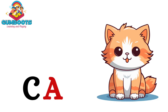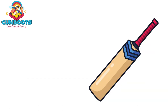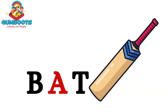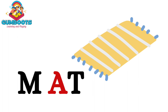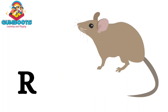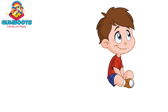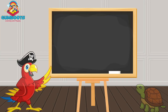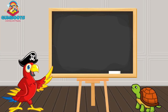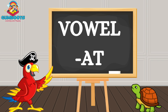P-A-T: Cat. B-A-T: Bat. M-A-T: Mat. R-A-T: Rat. S-A-T: Sat. As these words are ending with A-T, these are called AT words.